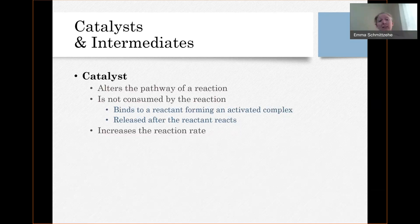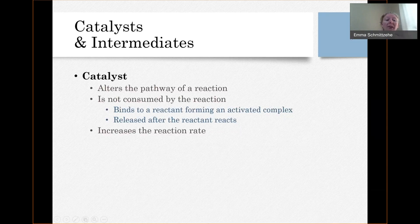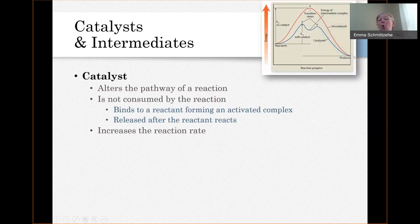The catalyst is there at the beginning and it's there at the end — it's unchanged. But it does cause the reaction to go faster because it gives the reaction a path that is quicker. The reason that pathway is quicker is because the activated complex that forms has a lower energy than the transition state or activated complex of the uncatalyzed reaction.